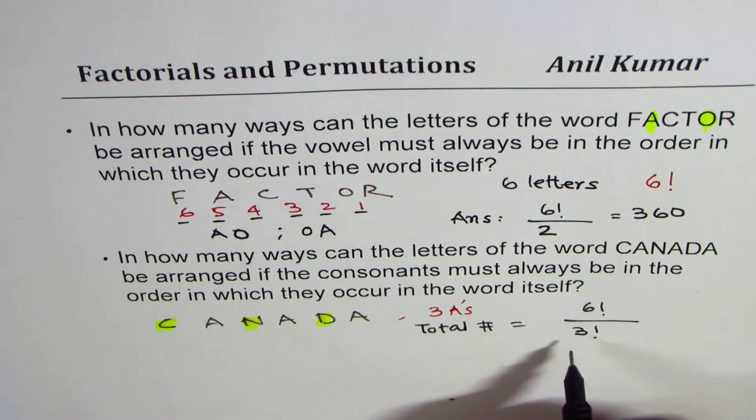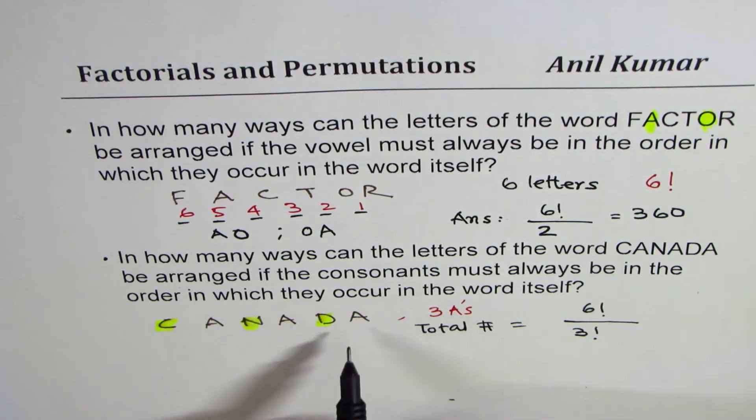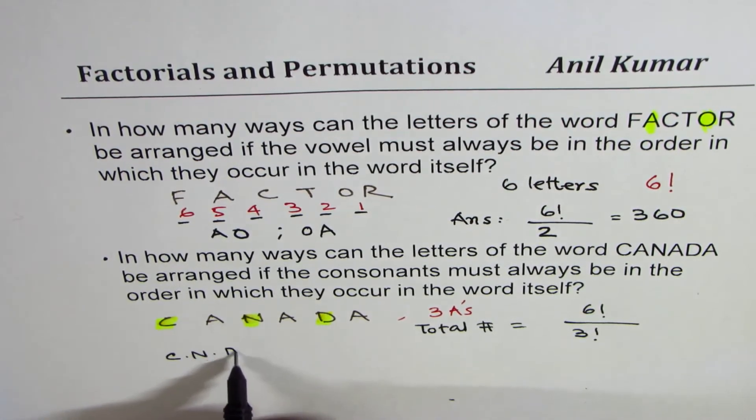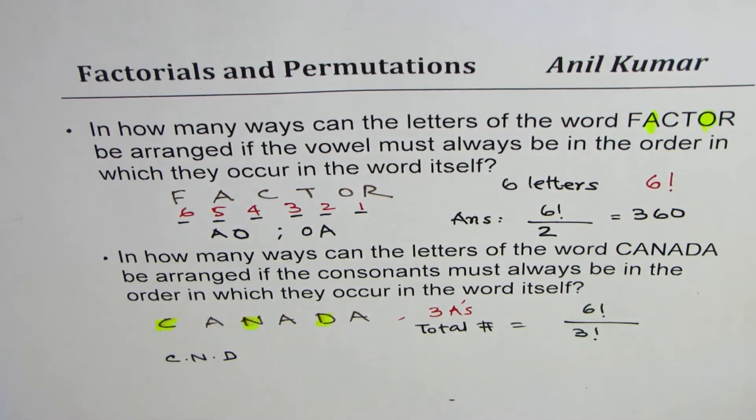So these are the total number of ways in which you can arrange CANADA. But we want the ones in which C, N, D order is maintained. So we want C followed by N followed by D. We want the exactly same order in all these words.